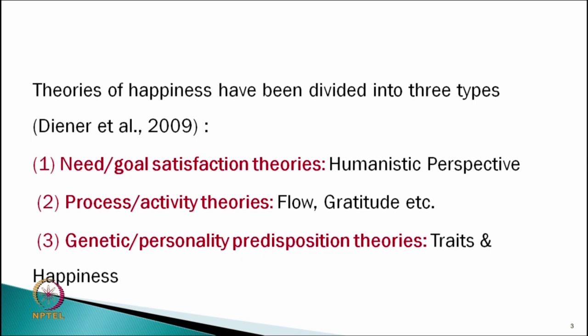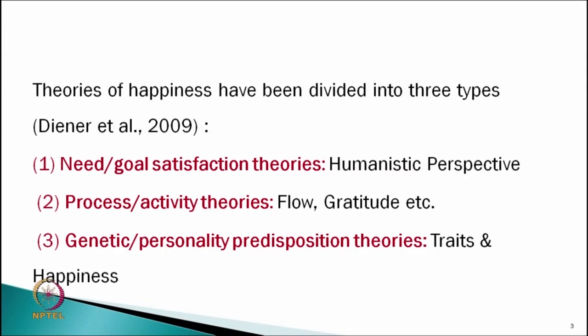Diener and his associates in 2009 categorized different theories in three categories. They said some scholars focused on need and goal satisfaction theories like the humanistic perspective. You can easily recall the need hierarchical theory in which Abraham Maslow mentioned that first we fulfill our basic needs like physiological needs, safety needs, love-belonging needs, and then only we have self-esteem and self-actualization. We are growing once we fulfill our basic needs.